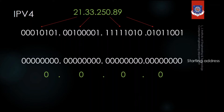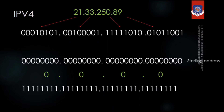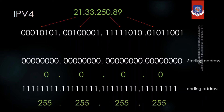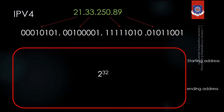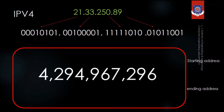To find the last address I will set all 32 bits to 1. When converted to decimal you get 255.255.255.255. So we have the starting address 0.0.0.0 and the last address 255.255.255.255, giving approximately 4 billion 294 million 967 thousand 296 IP addresses — too many, right?